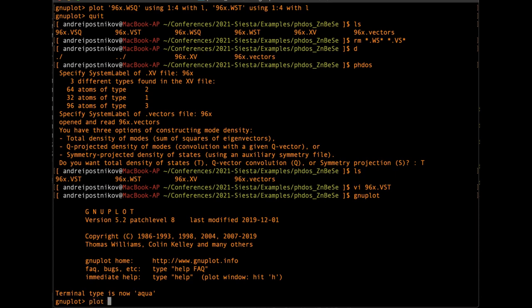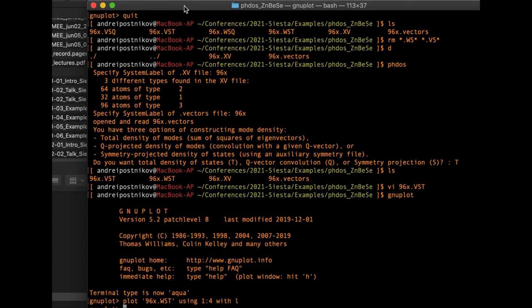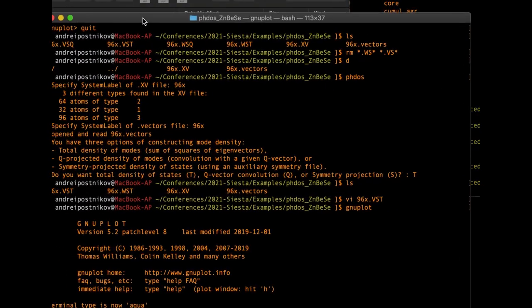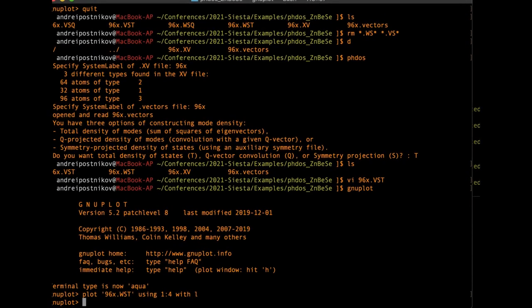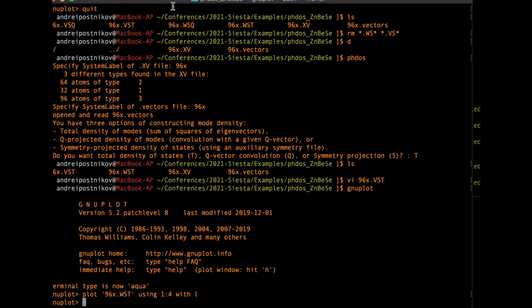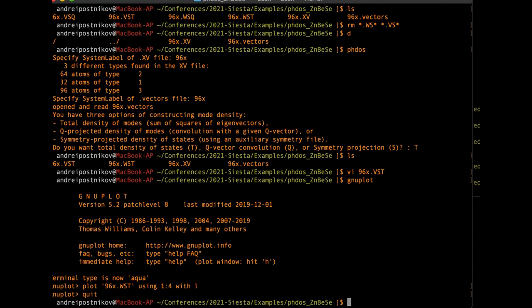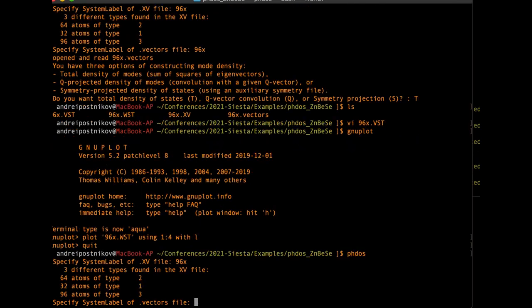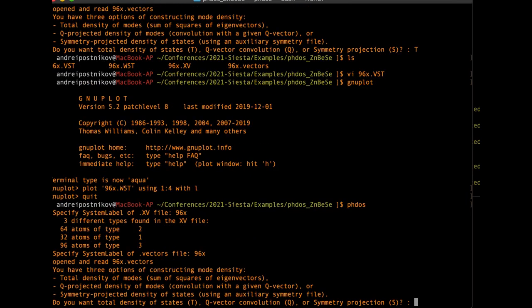I plot the smeared file using gnuplot. Here is the file. It looks like the phonon density of states. Then I close it and run the PHDOS again, passing the same names of files. But now I want to make a projection on a given Q vector. So I press Q.